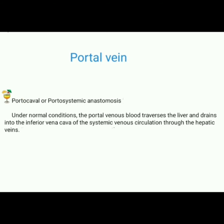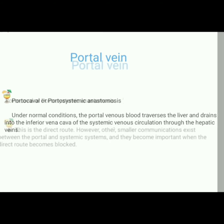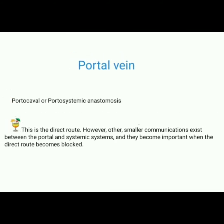Portosystemic anastomosis: under normal conditions, the portal venous blood traverses the liver and drains into the inferior vena cava of the systemic venous circulation through the hepatic veins. This is the direct route. However, other communications exist between the portal and systemic systems, and they become important when the direct route becomes blocked.